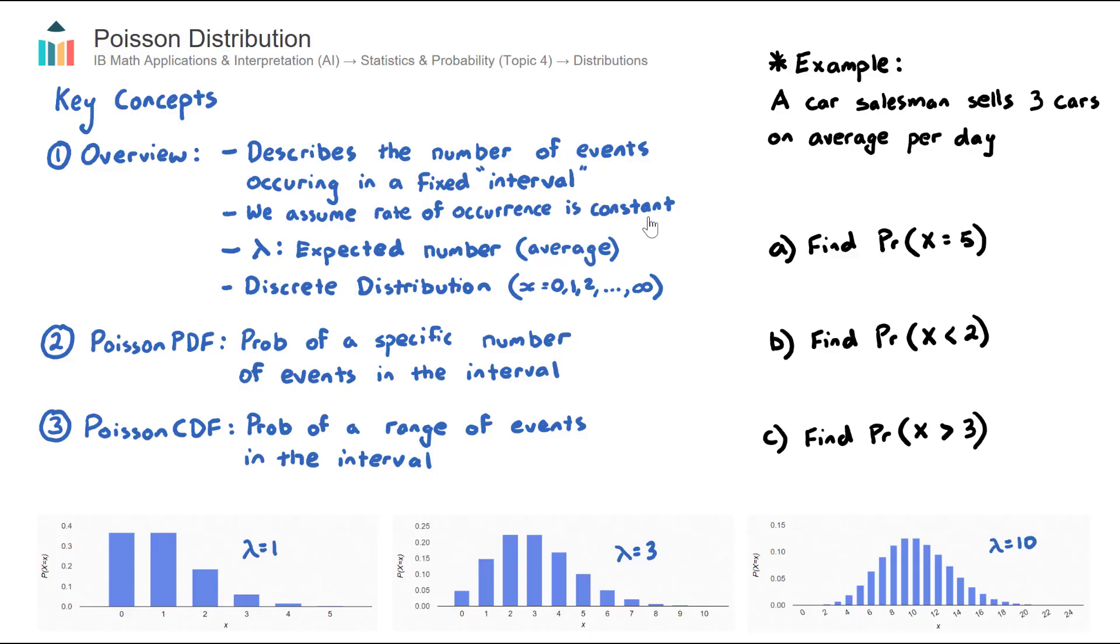The lambda in our example here, the expected number, is three. So on average, this car salesman sells three cars in the interval, average per day.